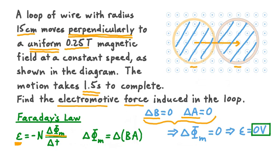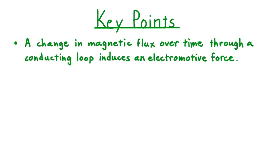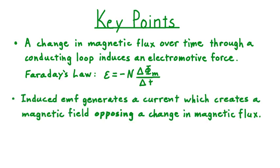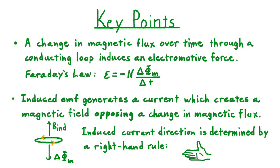Let's take a moment to summarize what we've learned about electromagnetic interactions in conducting loops. A change in magnetic flux over time through a conducting loop induces an electromotive force in that loop — this is described by Faraday's Law of Electromagnetic Induction. When EMF is induced, it generates a current which creates a magnetic field whose direction opposes the change in magnetic flux originally experienced by the loop. The direction of this induced current is determined by the right-hand rule: point the thumb of your right hand in the direction of the induced magnetic field, curl your fingers, and the direction of the curl tells us the way induced current points.